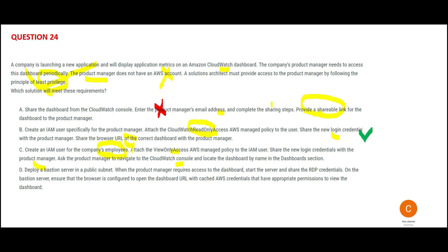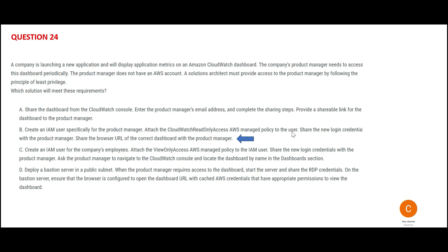Option B takes fewer steps; option C takes more steps, and C is creating the user for employees, not the product manager, so C is wrong. Option D says you use a bastion server — when the product manager requires access, you start the server, share RDP credentials, ensure the browser is configured, and cache credentials. The problem is: if the product manager wants access at midnight, your support team has to be awake to start the server. Only crazy people would select option D.